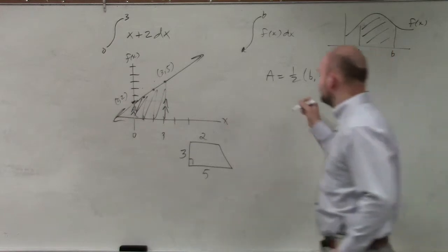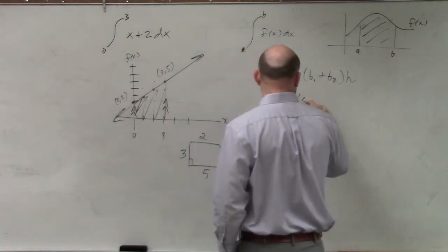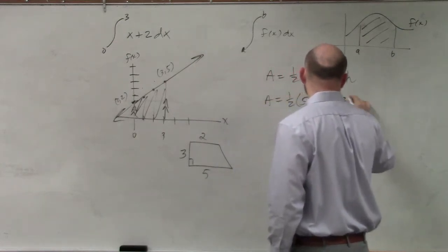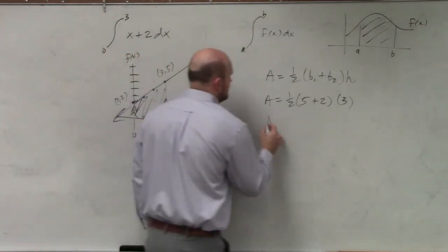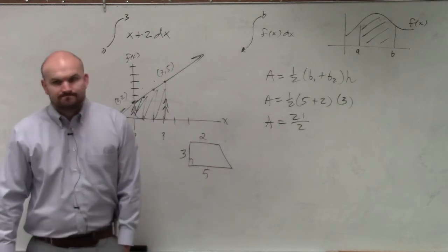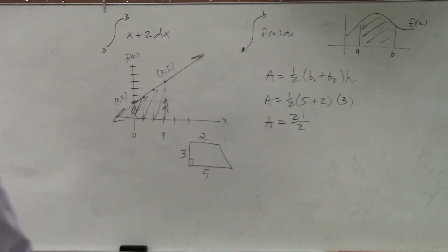So now I can go ahead and plug it in. So area equals 1 half times base 1, which is going to be 5 plus 2, times our height, which is going to be 3. 5 plus 2 is 7, times 3 is 21. So area equals 21 halves. Okay? So just be careful with that one.